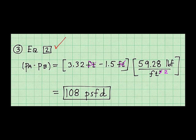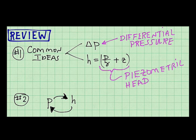Step 3 of my plan is to apply equation 2 to calculate the pressure difference between A and B. The result is 108 pounds-force per square foot, and this is a differential pressure.